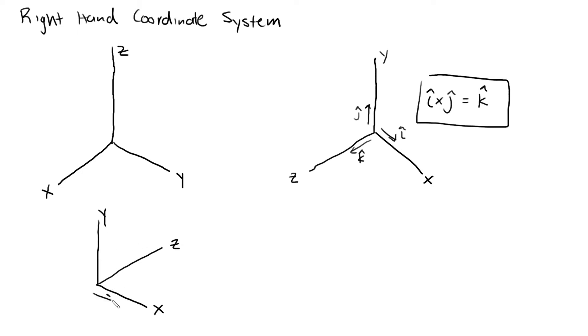This is i, this is j. If you do i cross j, the real answer will be pointing in this direction. This is the real z vector, or z unit vector. But since you defined z positive in this direction...